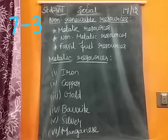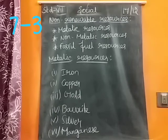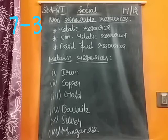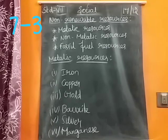Mexico is the world's leading silver producer. Next is manganese. Manganese is a steel-gray, hard, shiny, and brittle metal. It looks shiny and it is a brittle metal.